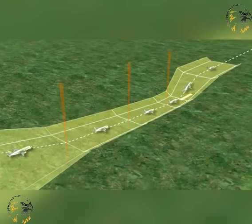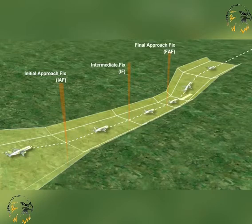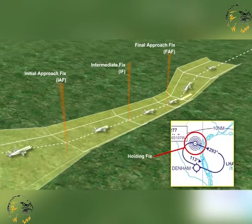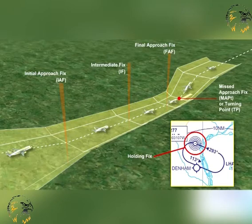Fixes and points used in designating approach procedures include, but are not limited to: the initial approach fix, IAF; the intermediate fix, IF; the final approach fix, FAF; the holding fix; and where necessary, the missed approach point fix, MAPT, or the turning point, TP. Fixes are normally all derived from standard navigation systems.